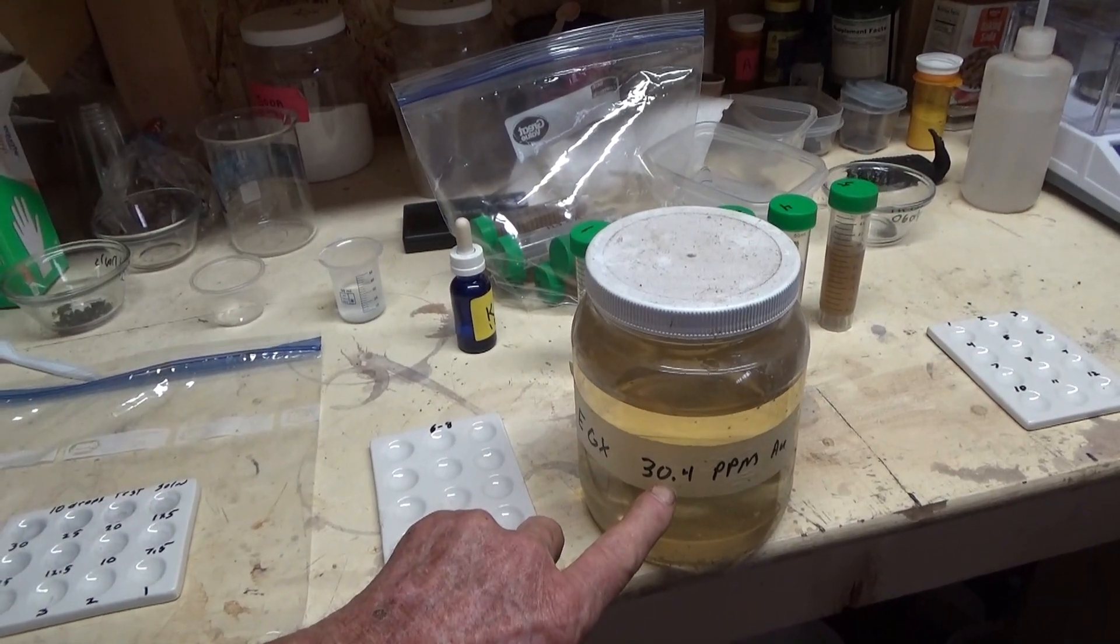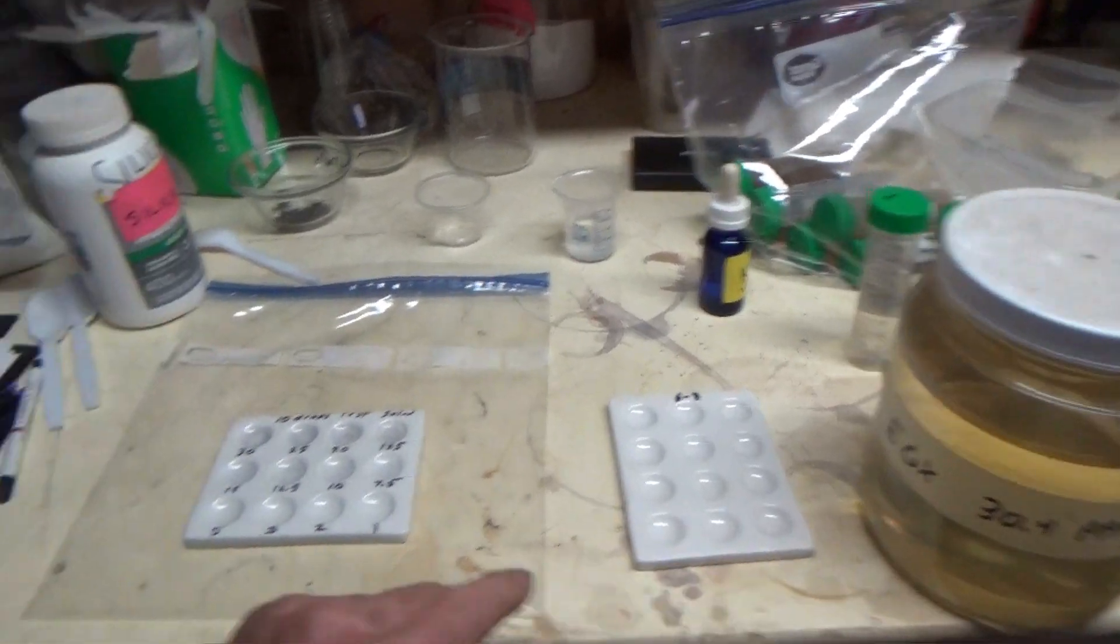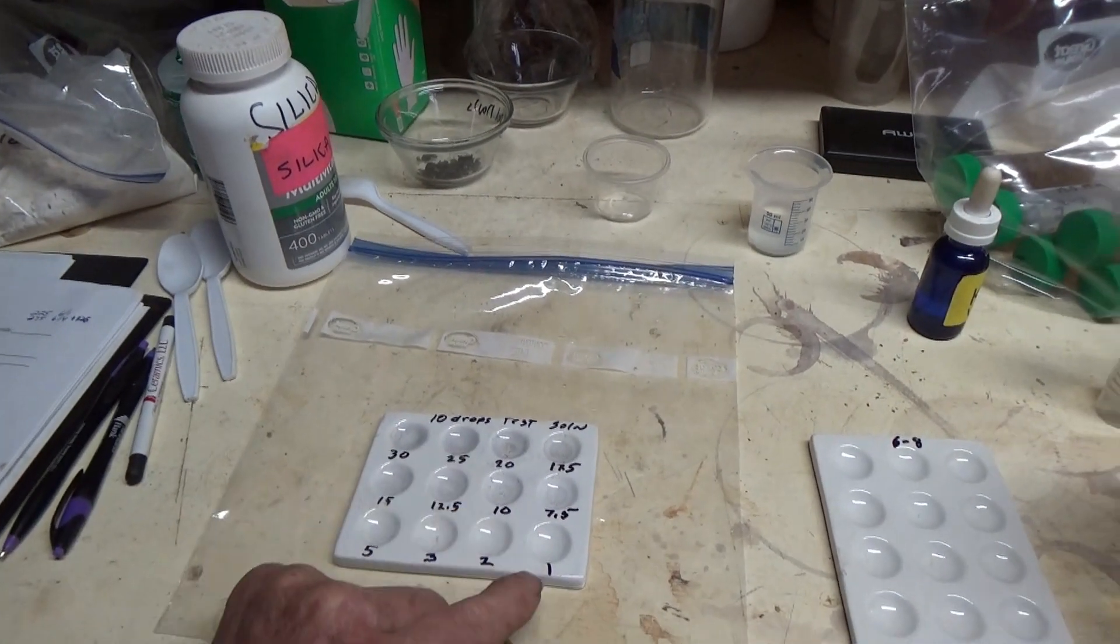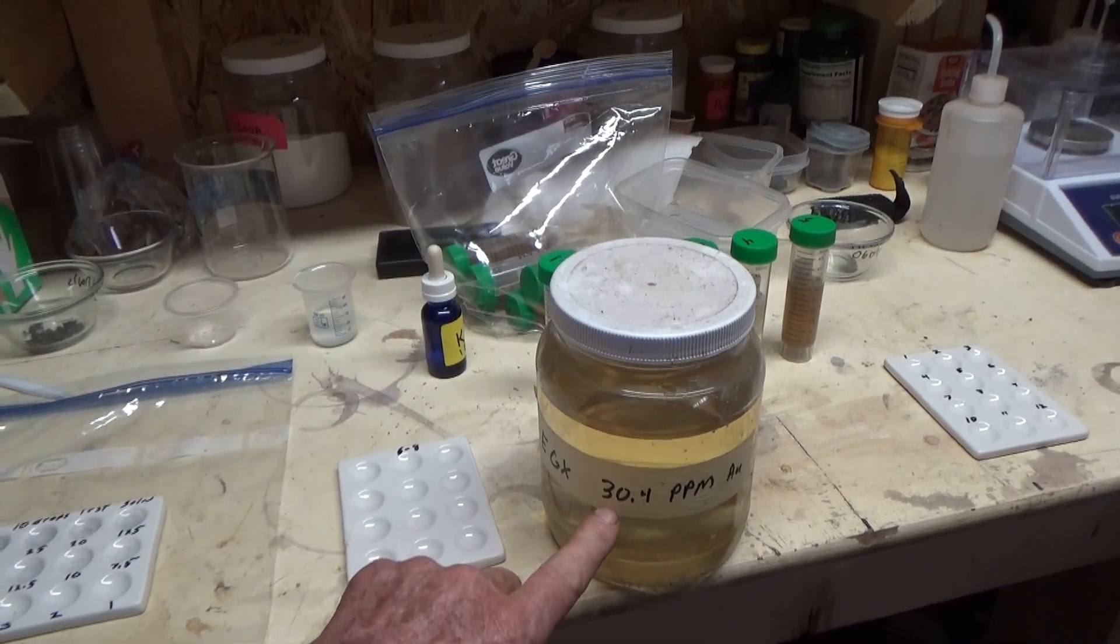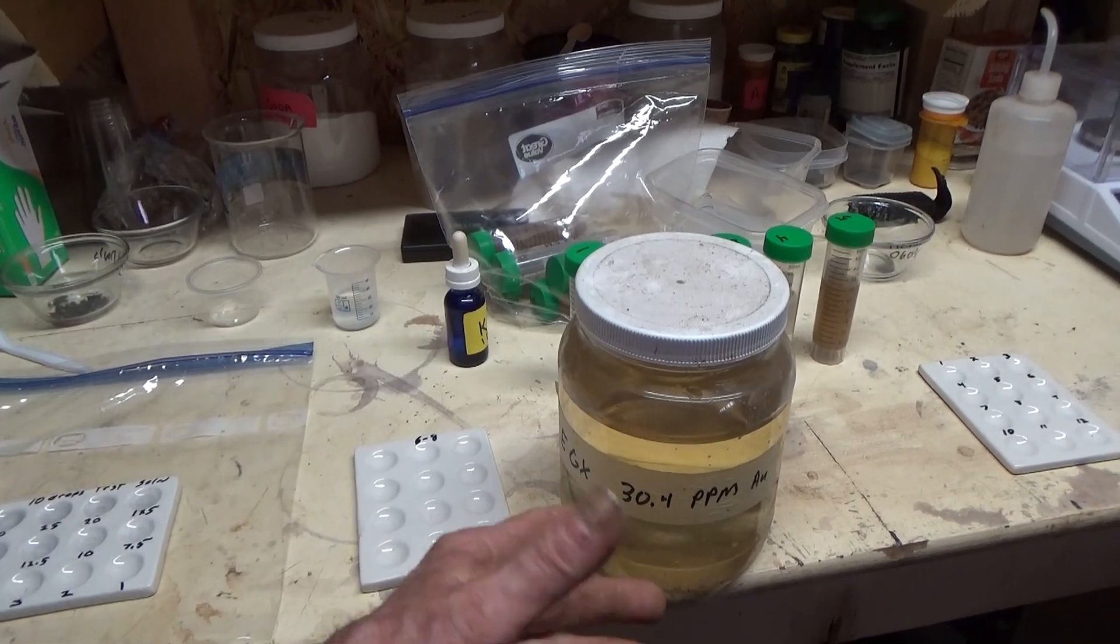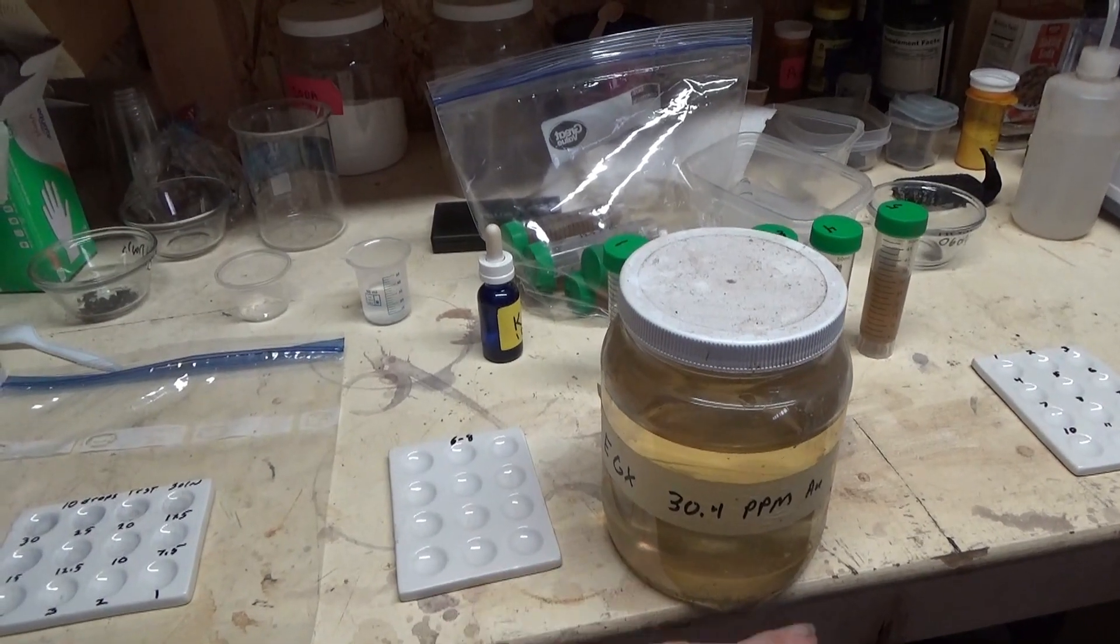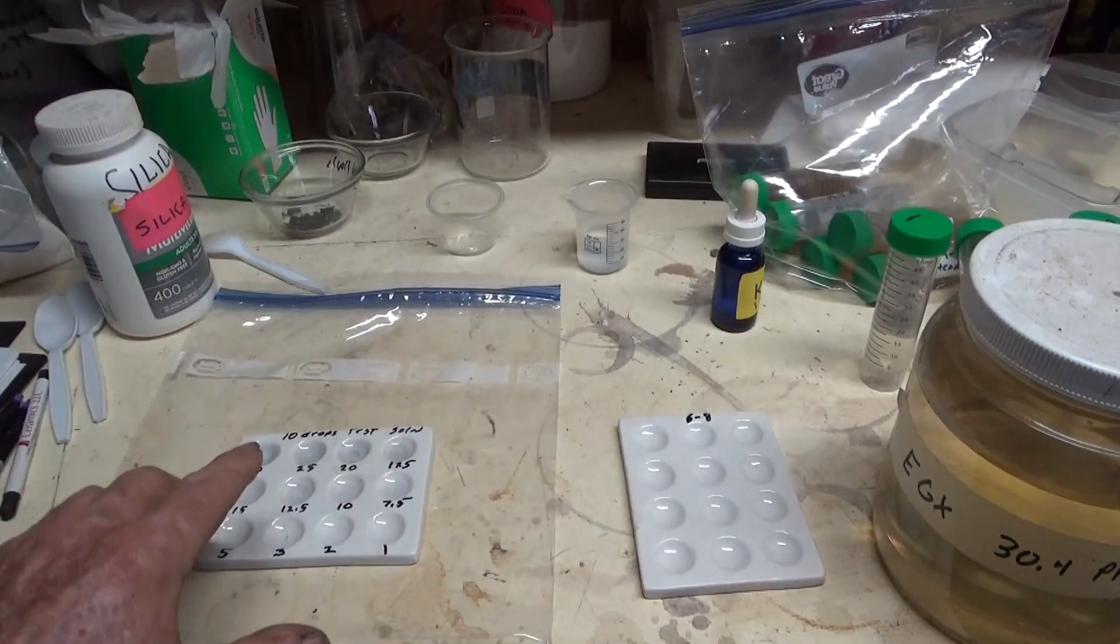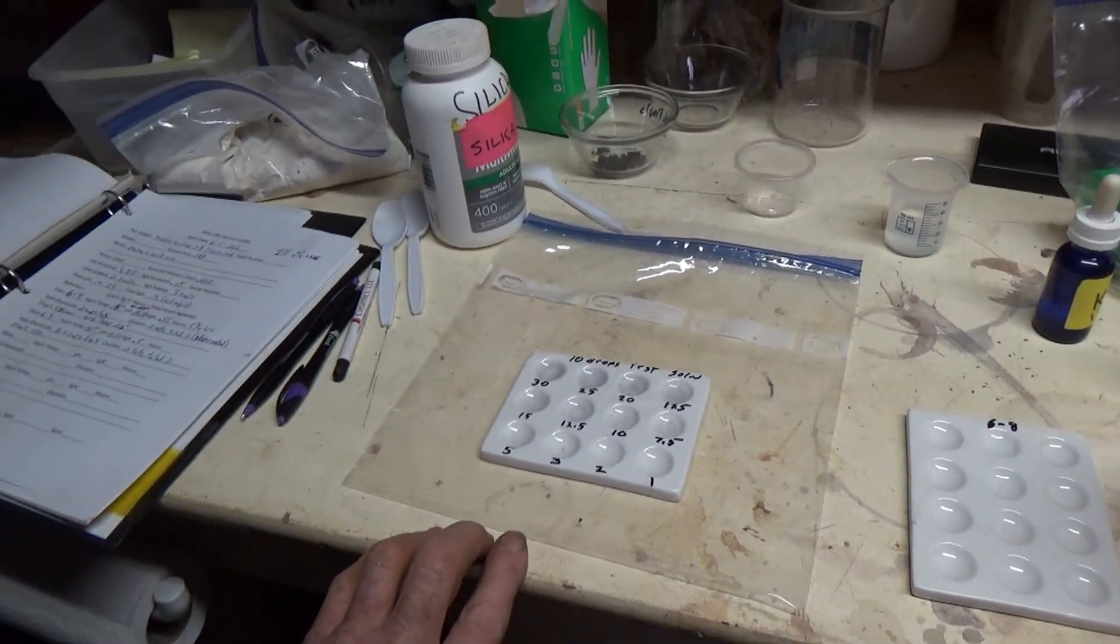You have 30 cc's of solution which is 25 of 30.4 and 5 of water, which makes up a total of 30. Then you've got 25. If you want one part per million, it's 29 of water and one of solution. So basically every drop, every portion of solution per 30 that you put in when you mix the various dilutions will give you one part per million.